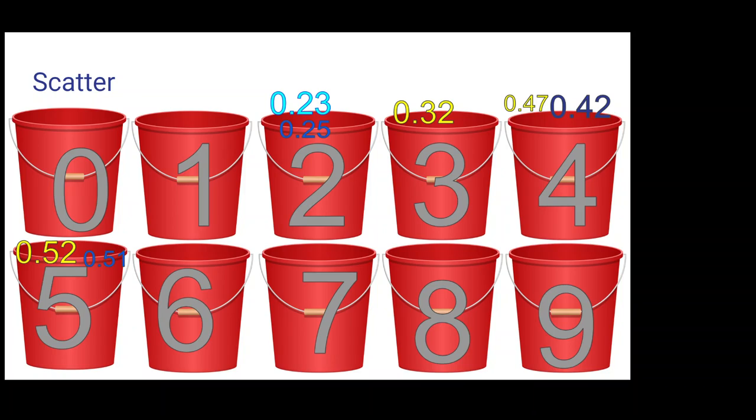The way we're going to sort these elements into each respective bucket is we take 0.23, multiply it by 10, and convert that value to an integer. 0.23 times 10 equals 2.3. Convert that to an integer, you get 2, so you put it in the second bucket. Same thing with 0.25: multiply by 10 equals 2.5, convert to integer, you get 2, put it in the second bucket.